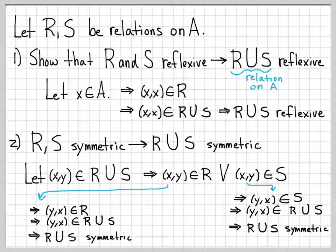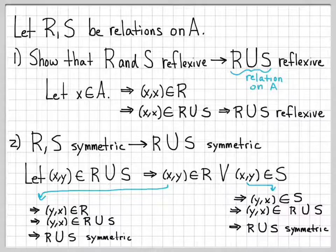So those are two little proofs showing how baseline relations R and S with certain properties can transfer those properties to operations on the relations — in this case, the union of the two relations. This doesn't always happen for all operations, but when using unions, the reflexive and symmetric properties carry along for the ride.